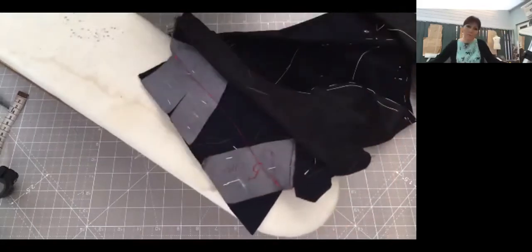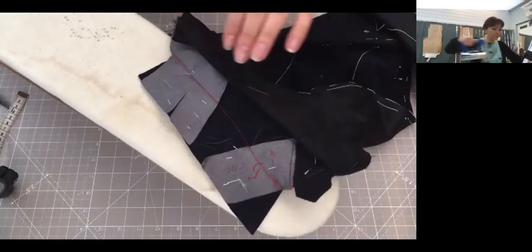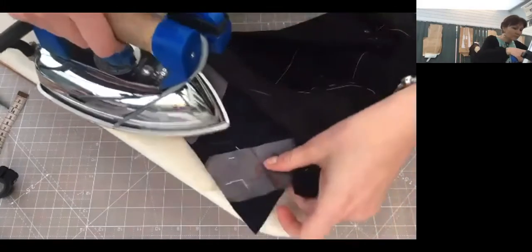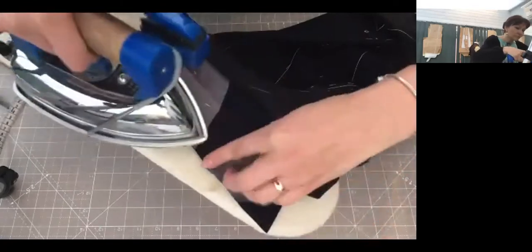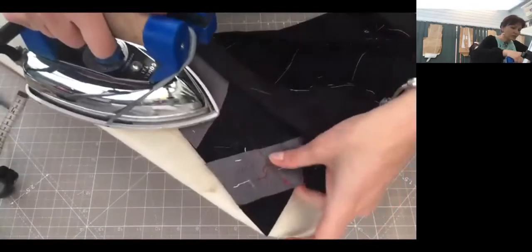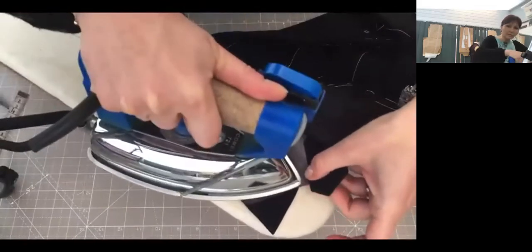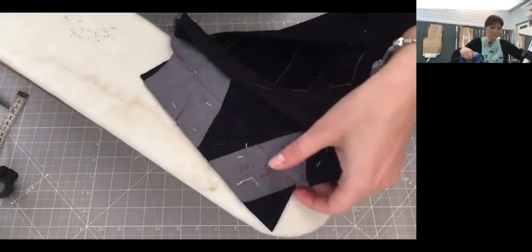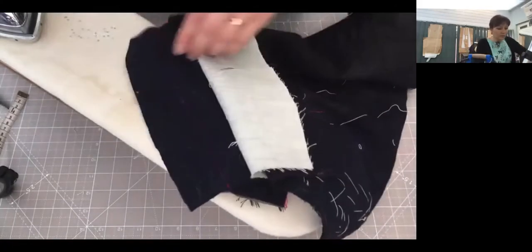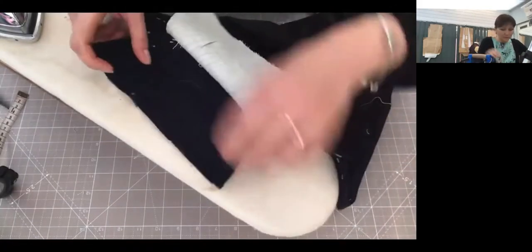The next part would be we have to press it. As you see, I'm pressing mainly in my seam allowance and then turning it to another side and I'm going to press here as well.